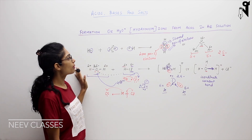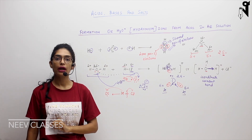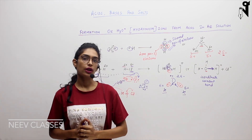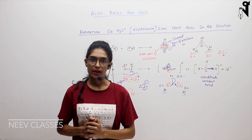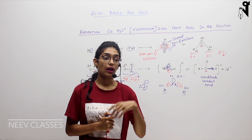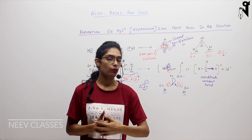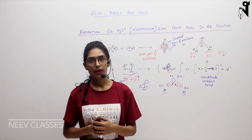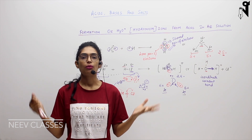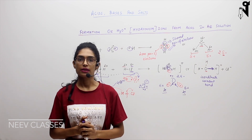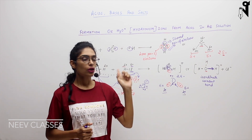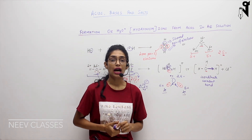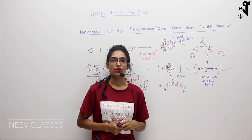This is about the formation of H₃O⁺ ions. In the next class we will talk about what are bases, their different classifications, and how hydroxide ions form. Then we will talk about properties of acids and bases. Till then, go through the content, solve the quizzes, and ask doubts in the doubt sessions.